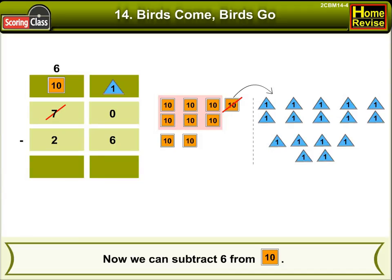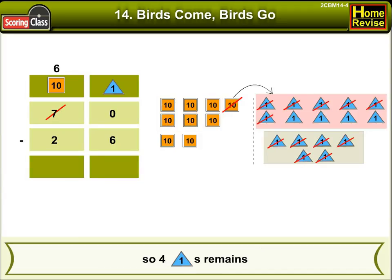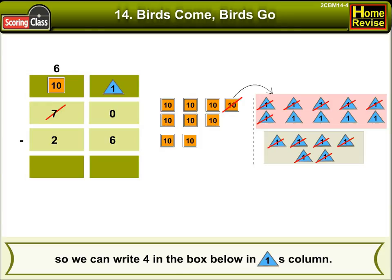We can subtract 6 from 10 ones. So, 4 ones remain. We can write 4 in the box below in the ones column.